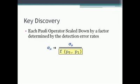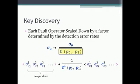Therefore, for an n-qubit correlator of Pauli operators in this form, the transformation by the detection error is just given by F to the n-power.